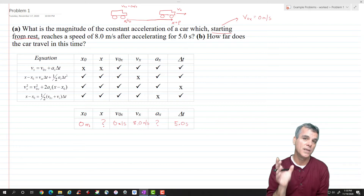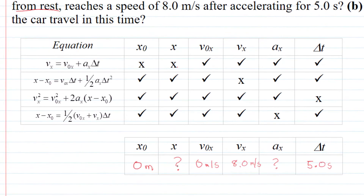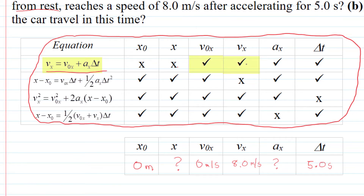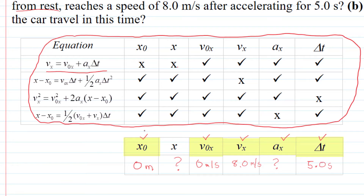The next step is to find the equation that has the unknown quantity and your known quantities. A helpful approach is to set up a table where you list each equation and note which variables it contains and which it's missing. For example, vx equals v0x plus ax delta t — it has v0x, vx, ax, and delta t, but it doesn't have x0 or x, which means I can't use that equation to solve for x or x0. I want the acceleration, and I've got delta t, vx, v0x, and x0, so I look at the chart to find what equation has ax and my known quantities.